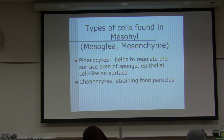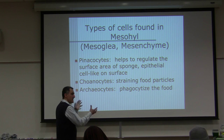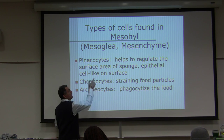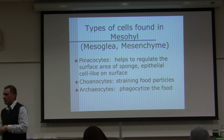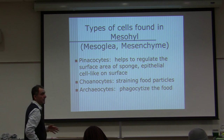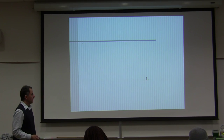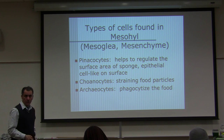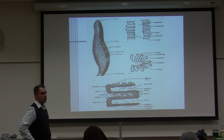The cells completely embedded in the mesoglia/mesenchyme area are archaeocytes. 'Arche' means ancient — these are ancient-like, amoeba-like cells. They phagocytize the food and maintain the sponge.